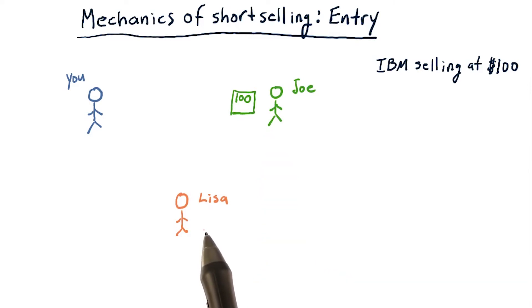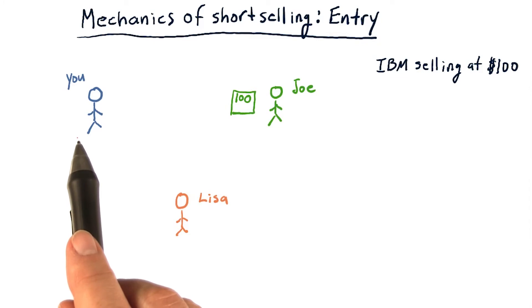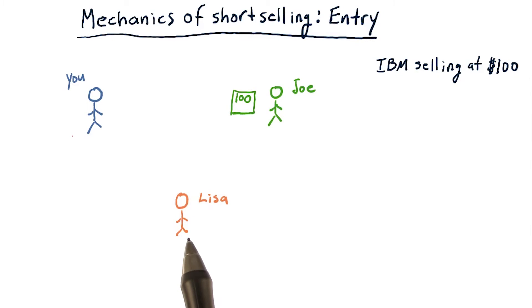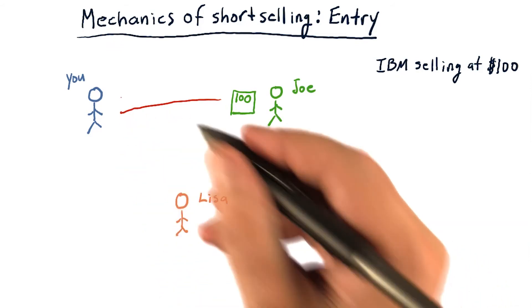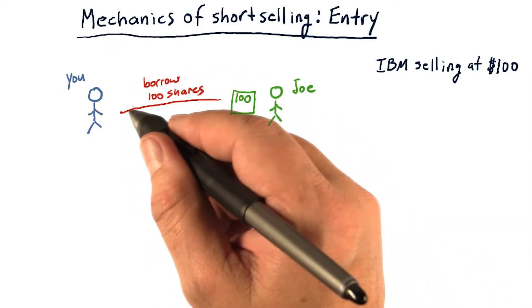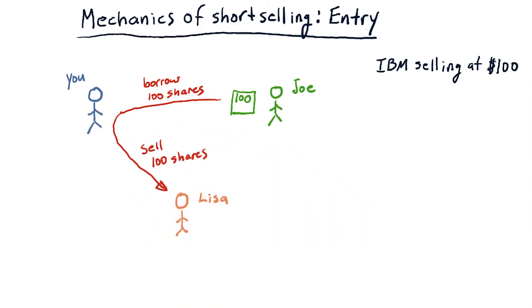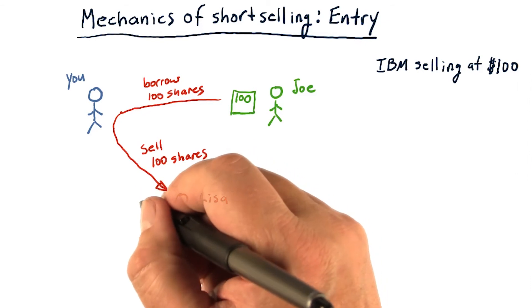Let's suppose Lisa thinks that IBM is going to go up and she wants to buy IBM. So you want to sell IBM short — you don't own any shares of it. Lisa wants to buy IBM; she thinks it's going to go up. So here's what happens: you borrow those 100 shares from Joe, you turn around and sell them to Lisa, and in exchange she gives you 100 times $100, or $10,000.